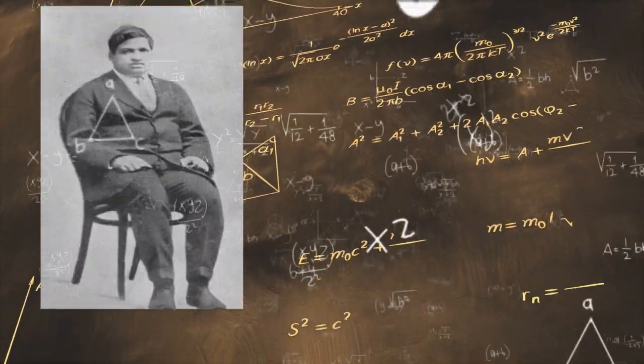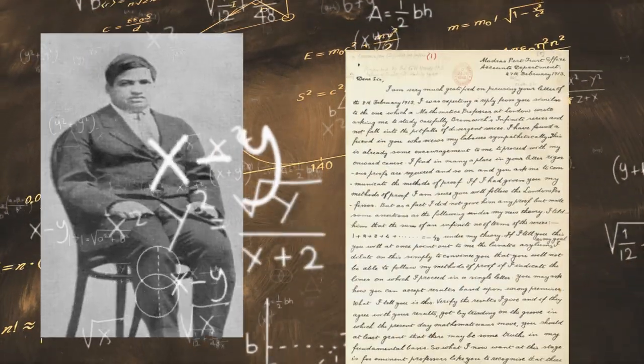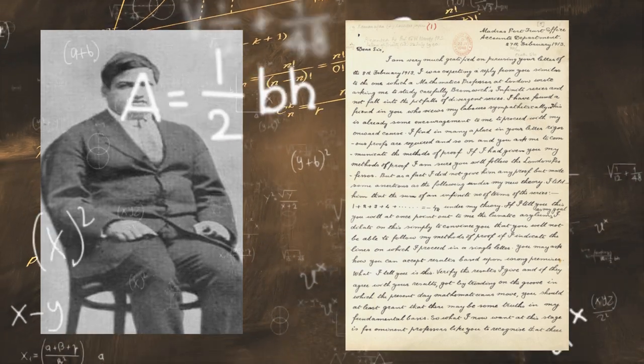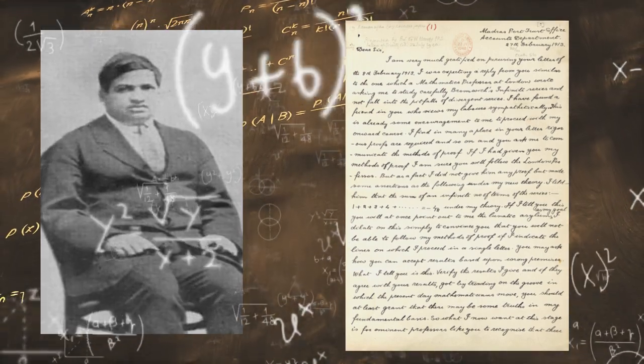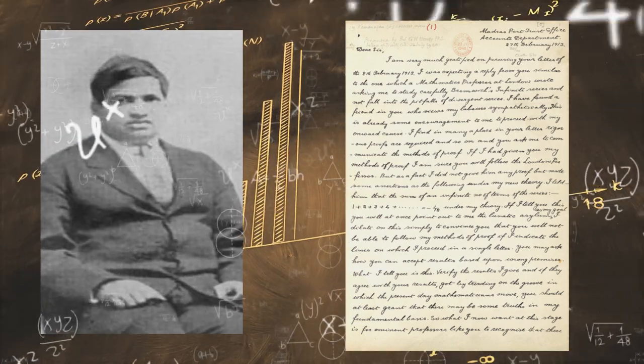In May 1917, Hardy wrote a letter to the University of Madras informing that Ramanujan was infected with an incurable disease, possibly tuberculosis. In order to get better medical treatment, it was necessary for him to stay in England for some time.